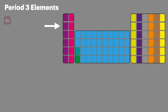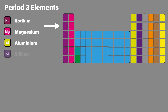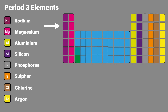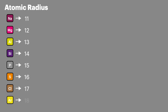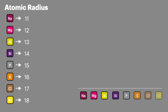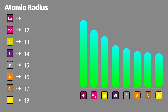Period 3 elements are found on the third row of the periodic table and they run all the way from sodium on the left to argon on the right. When it comes to atomic radius it's all to do with the number of protons, and as we go across the period we add a proton for each element. We can say that the trend for atomic radius is that it decreases as we go from sodium through to argon.